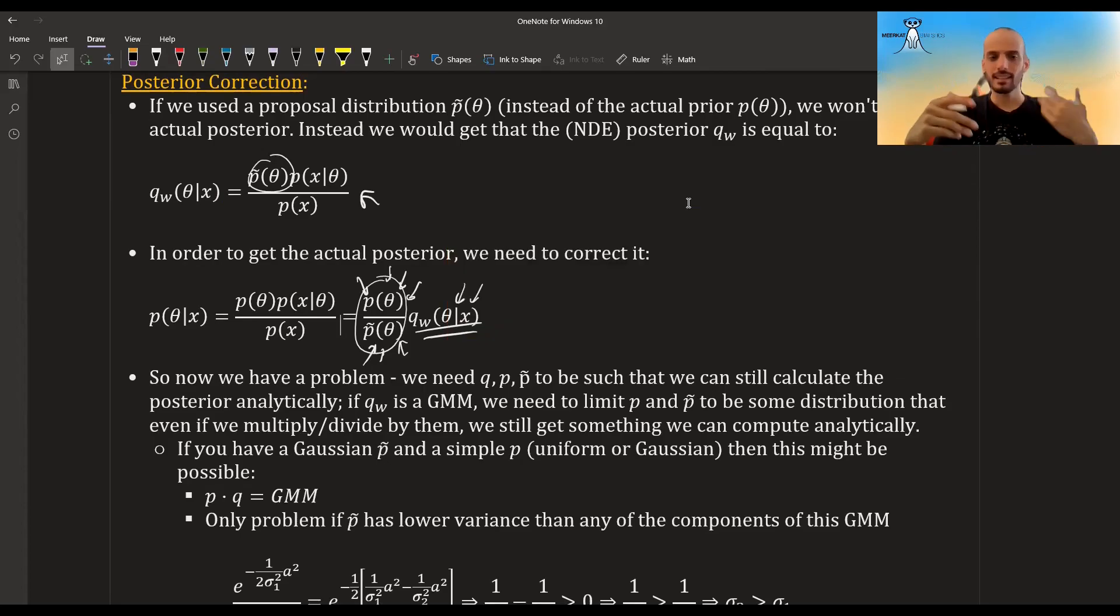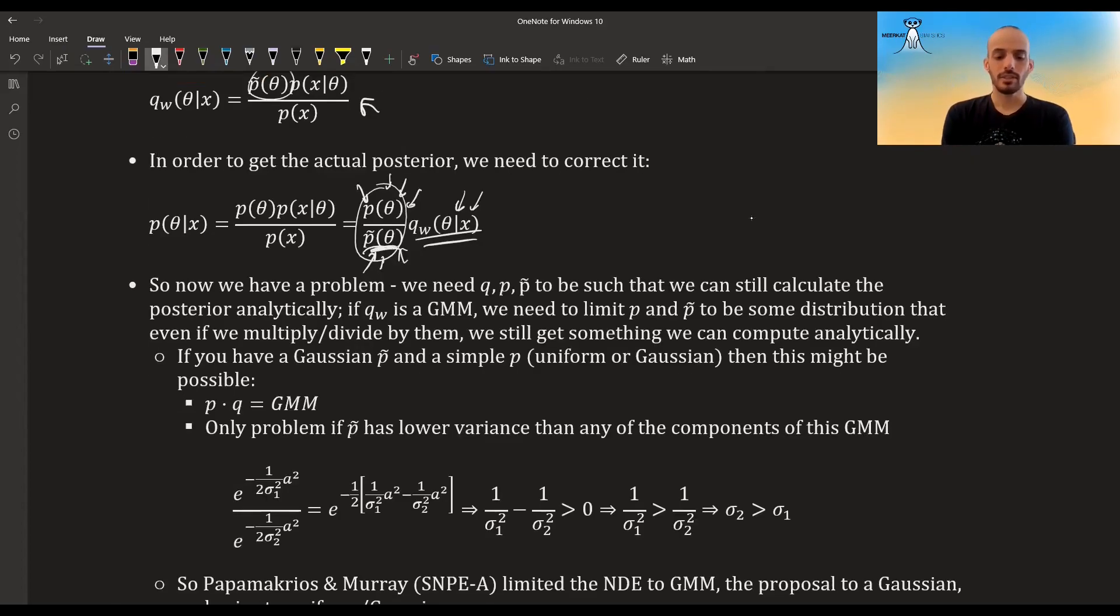If it's a uniform it doesn't even matter—we can just ignore it when trying to normalize the final posterior. If it's a Gaussian, then a Gaussian times a Gaussian divided by Gaussian—everything will be in the end a GMM. You will still get the GMM. There is only one problem: if this Gaussian has lower variance than even one of the Gaussians in the GMM here, then you will get something that is not a valid distribution anymore.